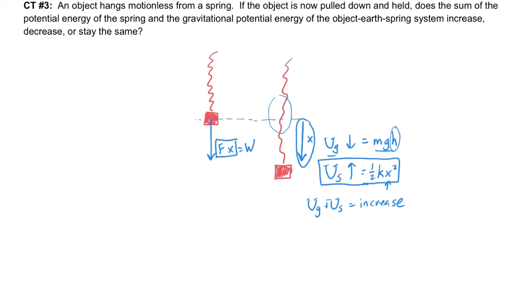Just think about it. If you were to release it, it would shoot upwards. And when it got to the same point that it was at before, it would have the same gravitational as before, the same elastic potential, but it would also have kinetic energy now, which means that when you pull it down, you do work on it, causing the total energy to increase. All right. There you go. Moving on.